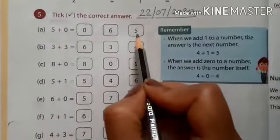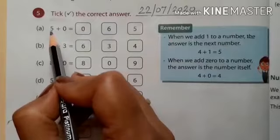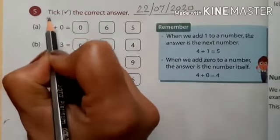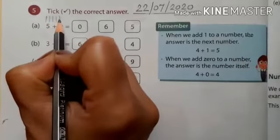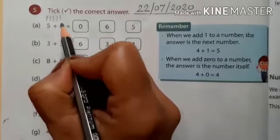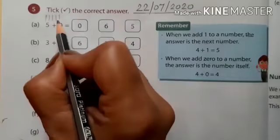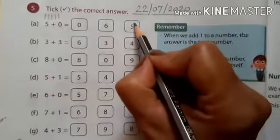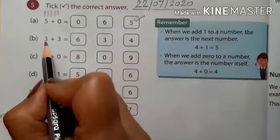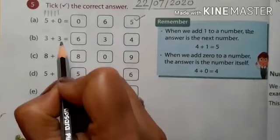There are three options. Now, the first number is 5, so draw 5 lines: 1, 2, 3, 4, 5. The next number is 0—don't draw any line. So total lines are 5. The correct answer is 5. Next sum: 3 plus 3.